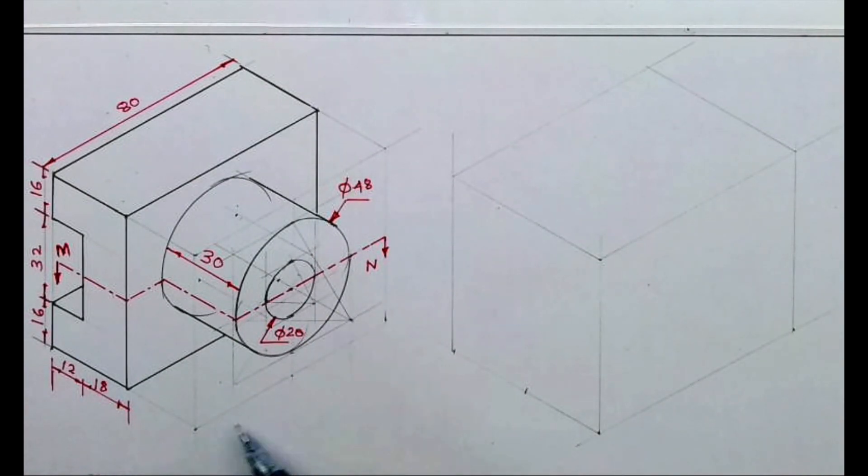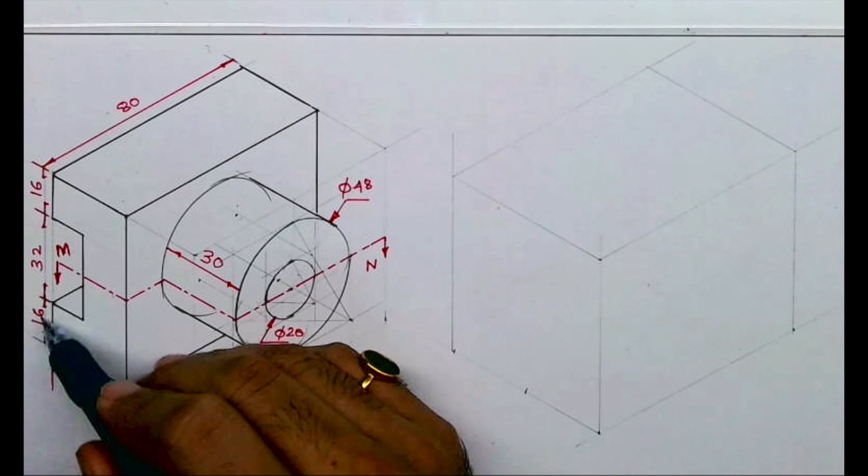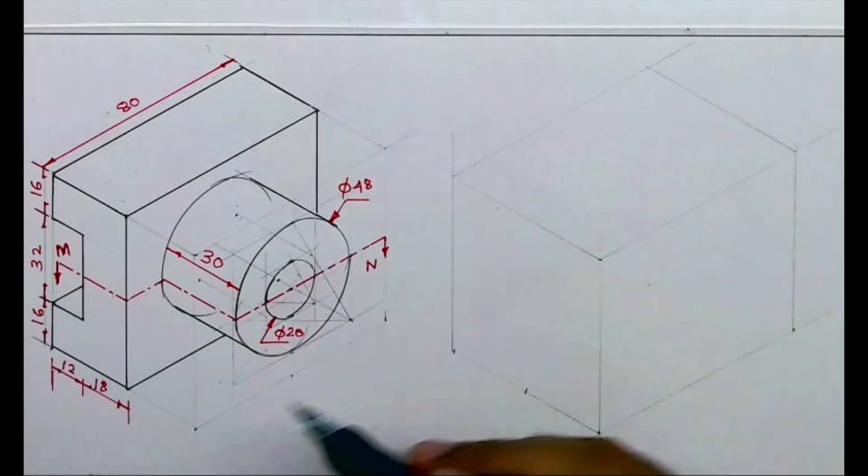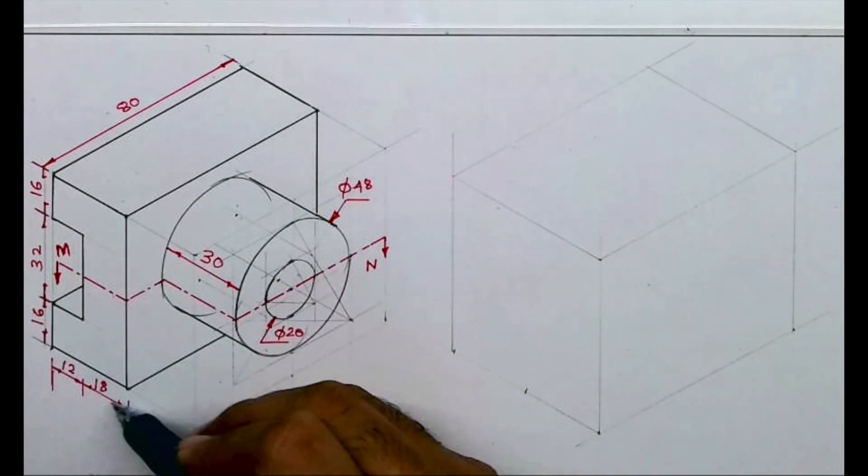Now in this, length is 80, height is 64 (16 plus 32 plus 16), and width is 60 (30 plus 30).